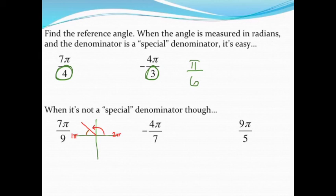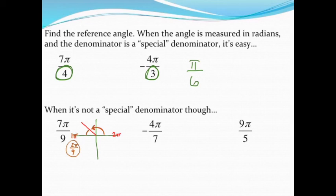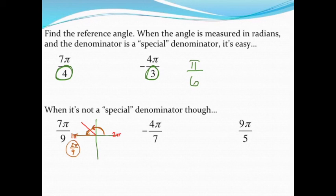That missing piece is going to be my reference angle. I already know that it took seven-ninths to get there. If I want to complete that fraction and get to one full integer value — one pi — I need to add two pi over nine, because 7π/9 plus 2π/9 gets me to one pi, that full half revolution. So I have seven out of nine pieces, and I'm missing two — that's kind of how I like to think of these.